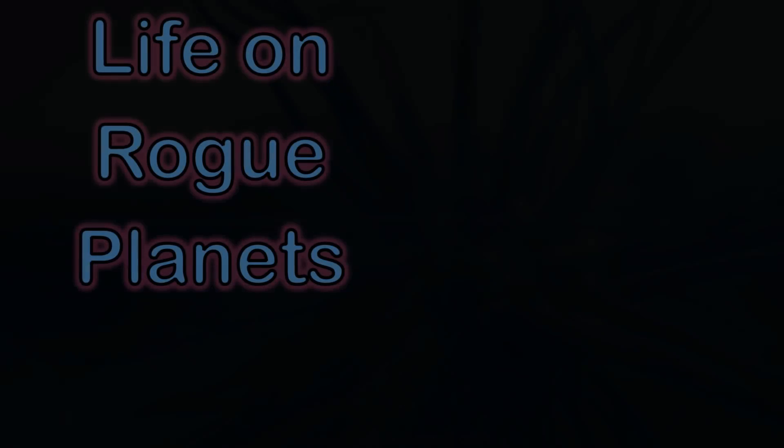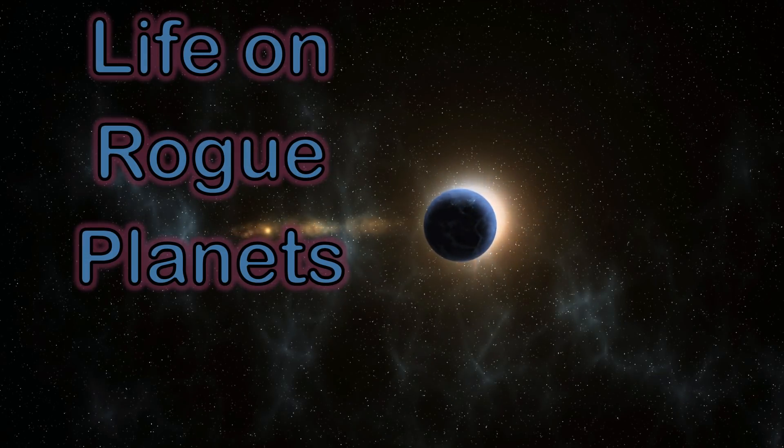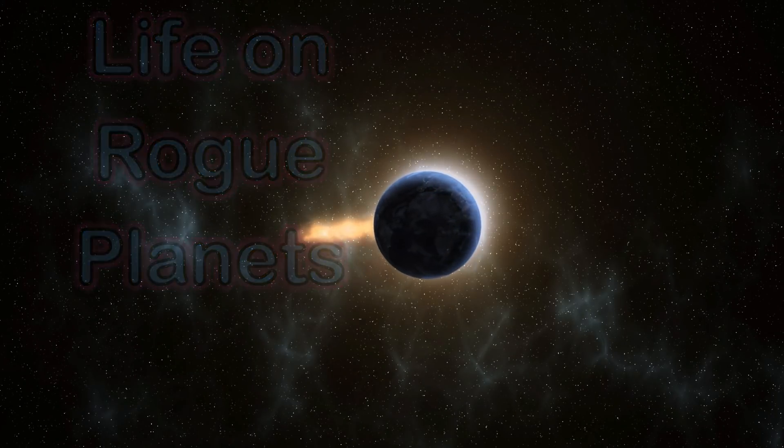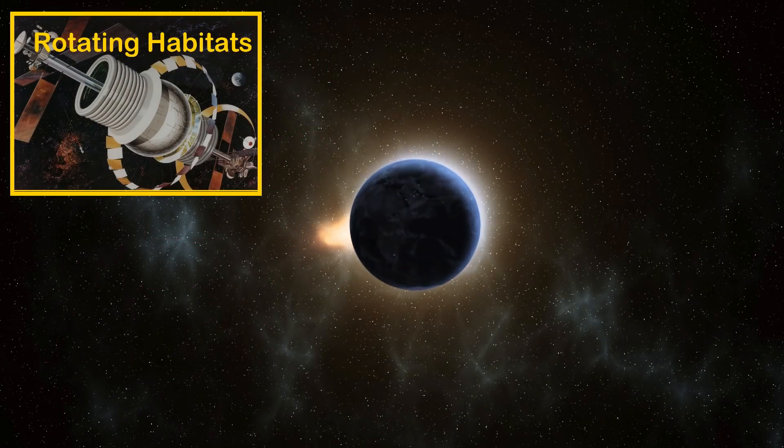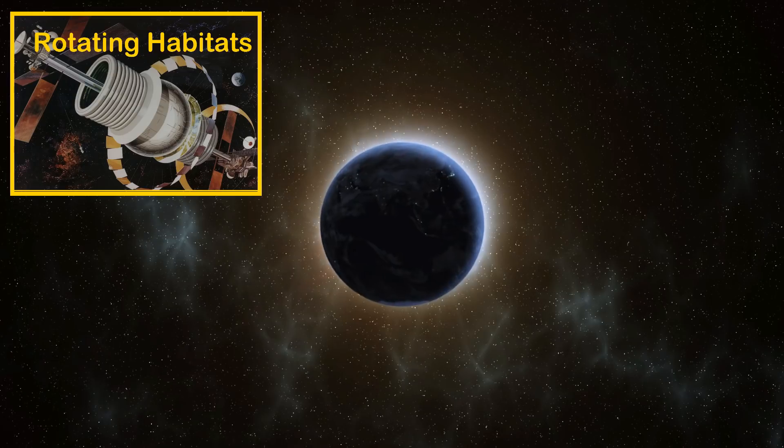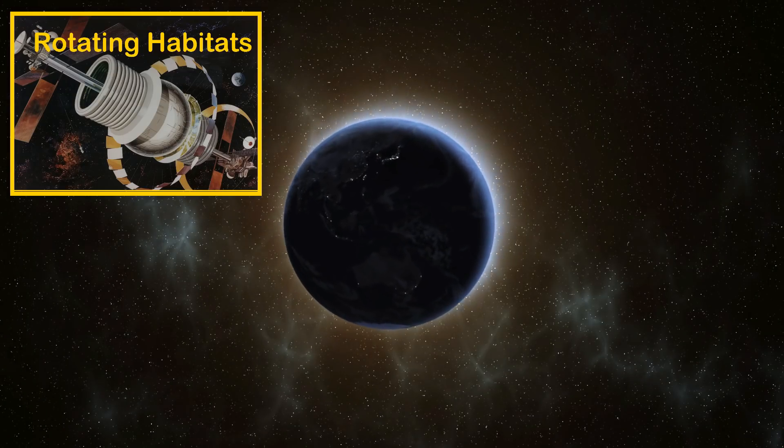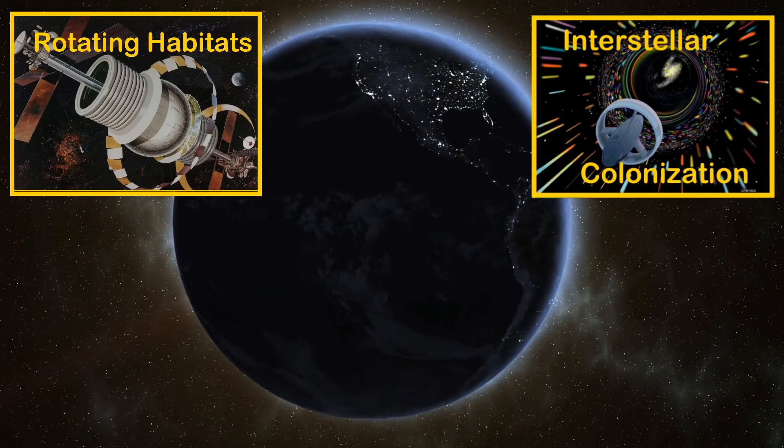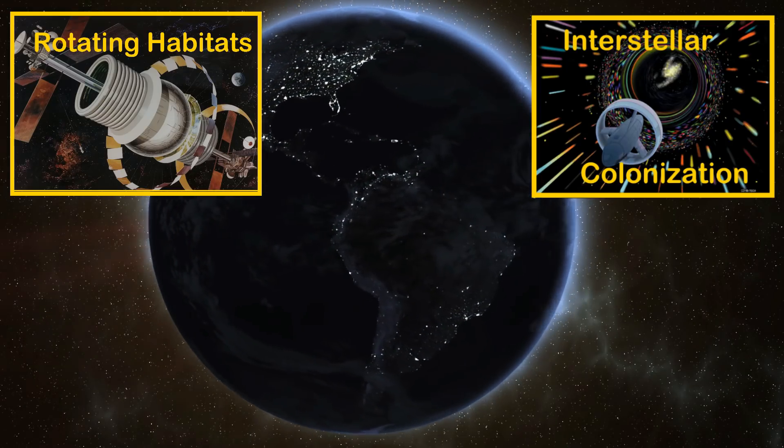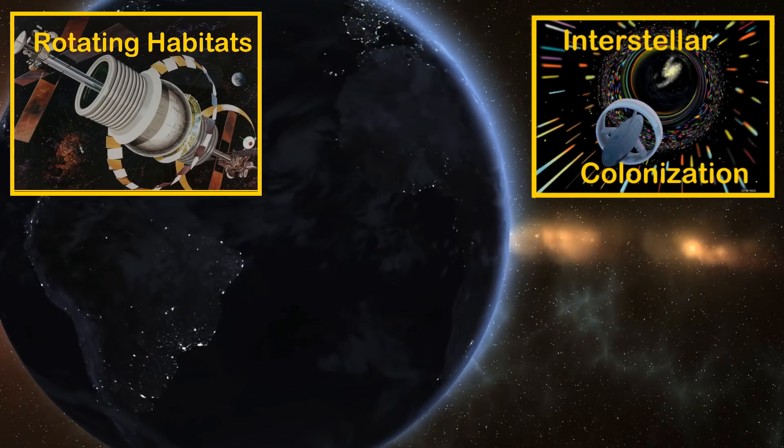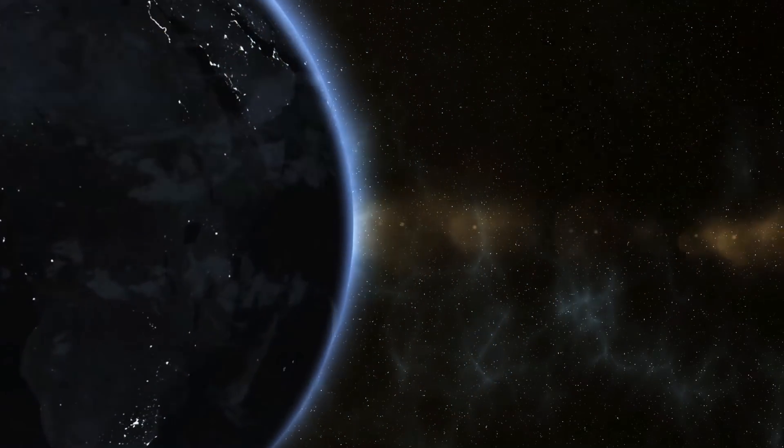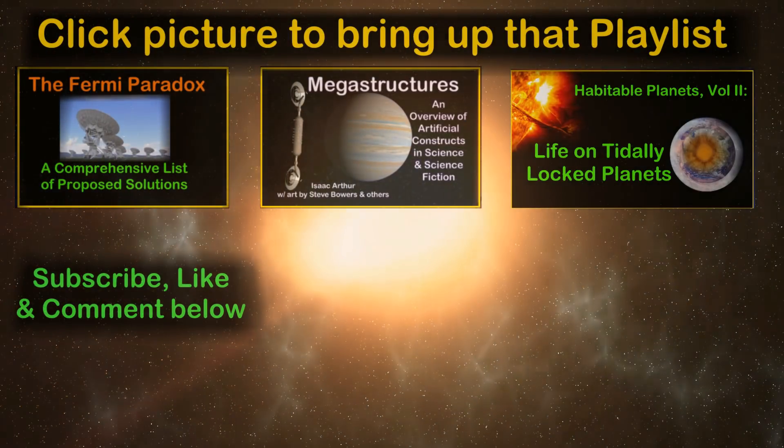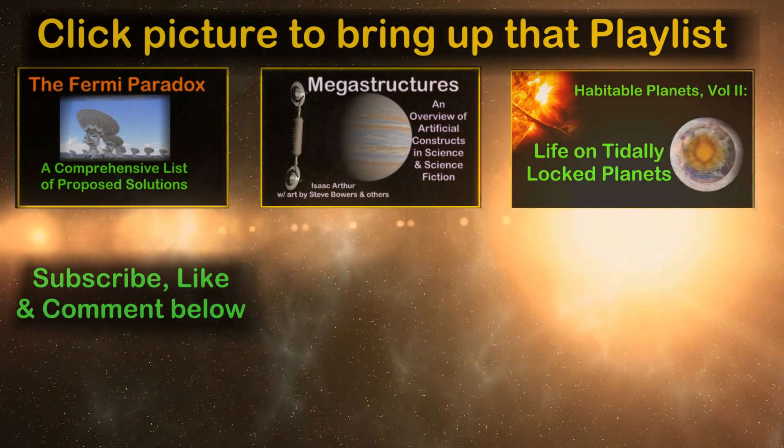So that's going to wrap it up for Rogue Planets for now. We'll look at how the smaller and likely more common Rogue Asteroids might be made habitable in the upcoming video on Rotating Habitats in our Megastructure series. Then talk about the importance of Rogue Planets to interstellar expansion and civilization in the upcoming video on Interstellar Colonization. If you want a reminder when those videos come out, click the subscribe button. As always, questions and comments are welcome, and if you enjoyed the video hit the like button and share with others. Thanks for watching, and have a great day.